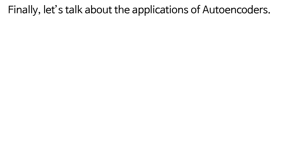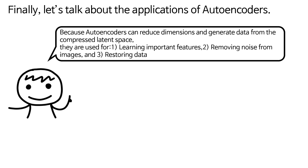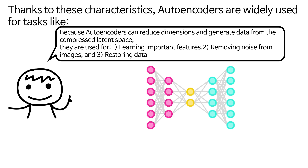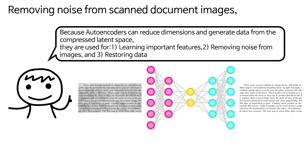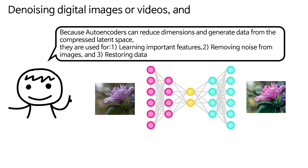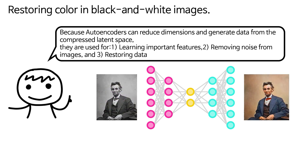Finally, let's talk about the applications of autoencoders. Because autoencoders can reduce dimensions and generate data from the compressed latent space, they are used for learning important features, removing noise from images, and restoring data. Autoencoders are widely used for tasks like removing noise from scanned document images, denoising digital images or videos, and restoring color in black and white images.